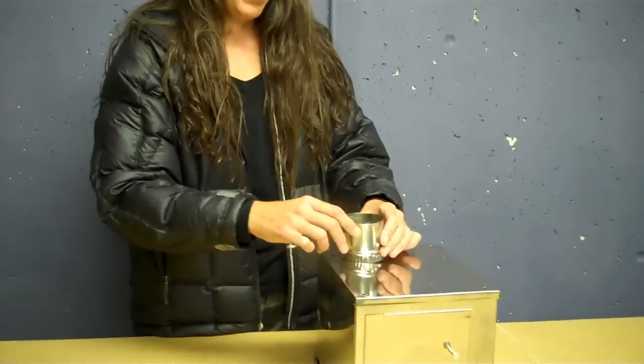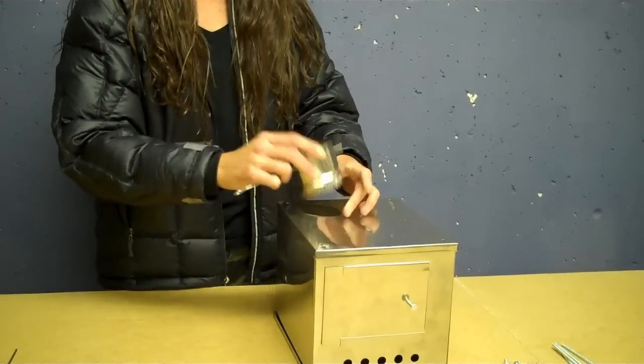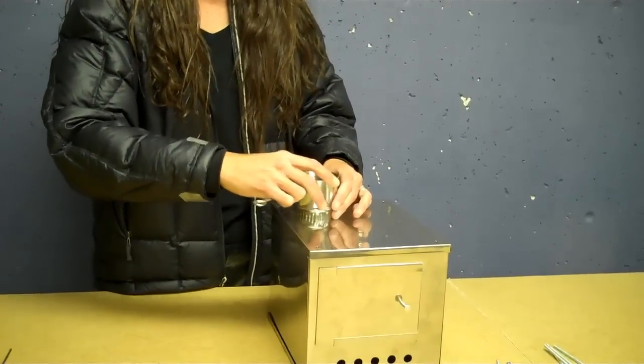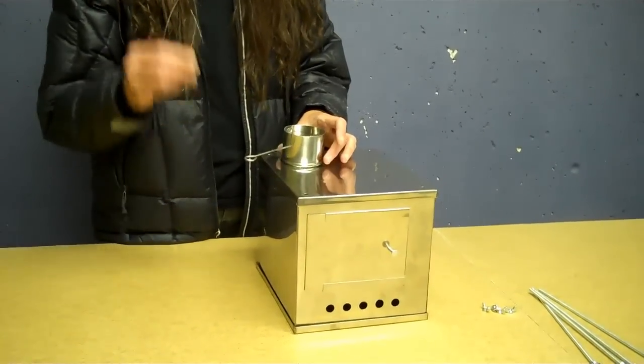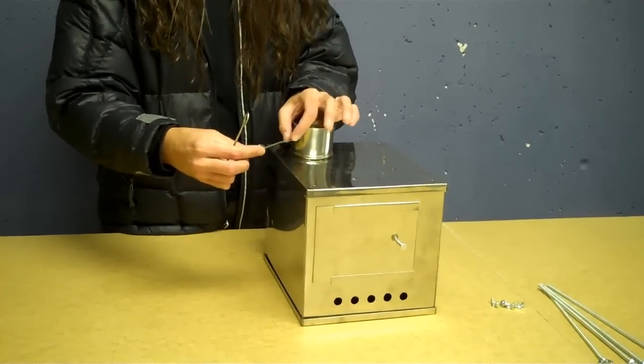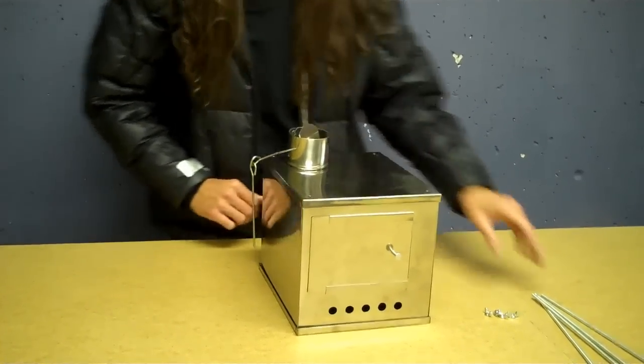This is your spark arrestor and damper. If you want to open the damper and keep it completely open, you can just hang a little tie stake on it.